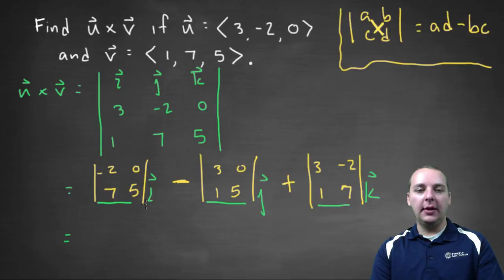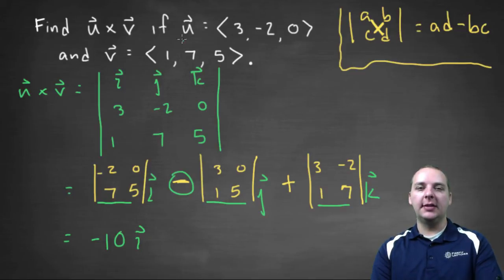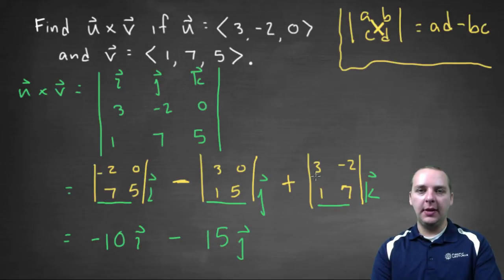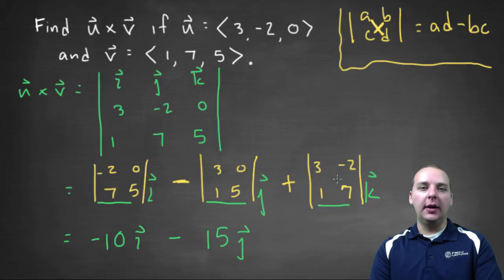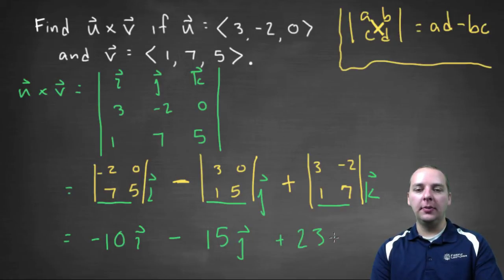The i component: take negative two times five, which is negative ten, minus zero times seven. So you get negative ten i. For the j component, be careful because there's a minus sign — you would get fifteen minus zero, which is fifteen, but with the minus sign it becomes negative fifteen j. For the k component, you'd have three times seven, which is twenty-one, minus negative two — and a very common mistake here with minuses and negatives — this is actually twenty-one plus two, because it's minus negative two. So that gives plus twenty-three k.